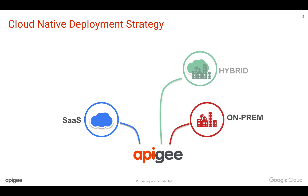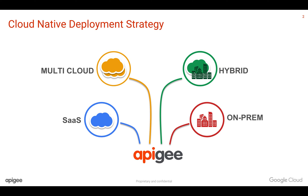Apigee also supports hybrid, where the micro gateways can be on-premises and you can at the same time leverage Apigee Edge cloud for analytics, developer portal, and API management. Apigee also supports multi-cloud. Let's discuss in detail about these different deployment strategies.